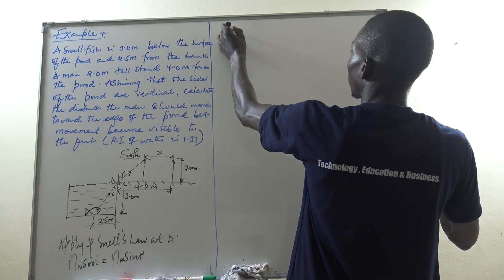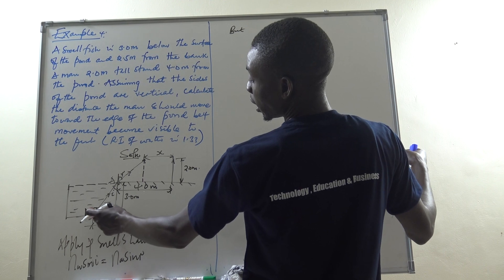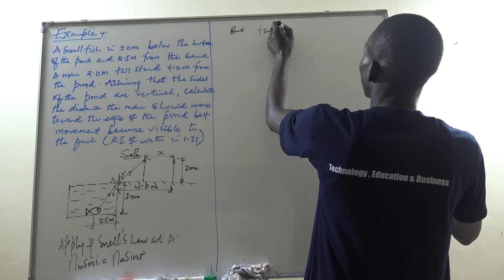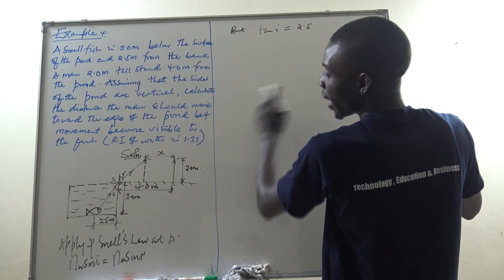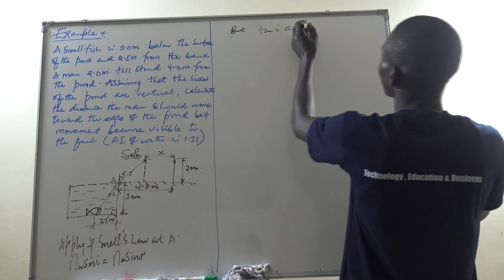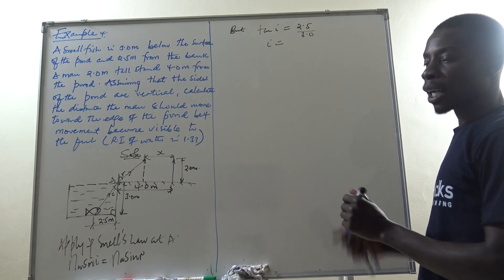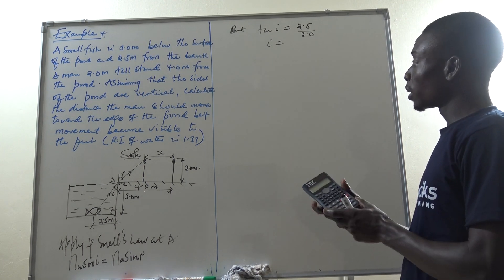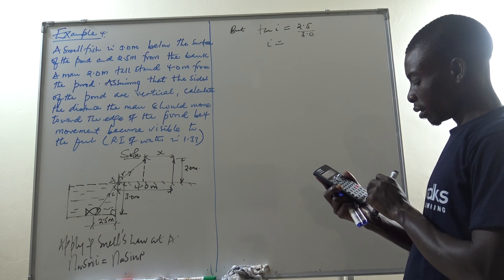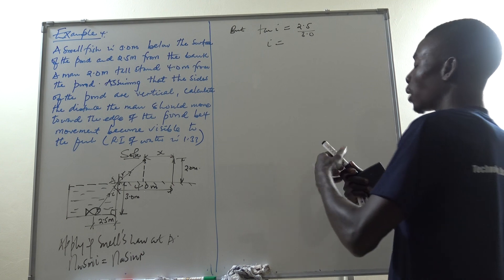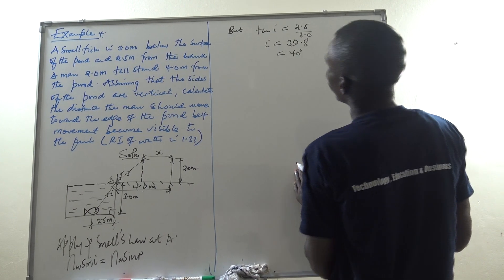To find angle i — the angle in water — I look at the triangle formed by the fish's position: the depth is 3.0 meters and the horizontal distance from the fish to the bank is 2.5 meters. So tan(i) = opposite over adjacent = 2.5 divided by 3.0. Using the calculator, i = arctan(2.5/3.0) which gives approximately 39.8 degrees, which I can take as 40 degrees.